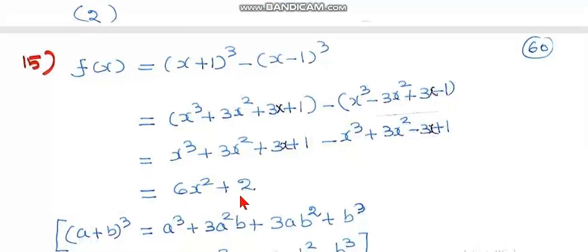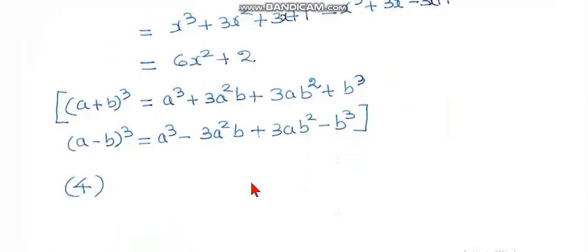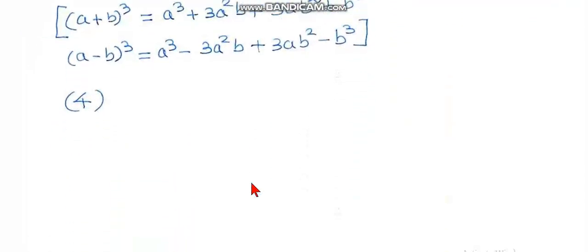Removing the brackets: x³ + 3x² + 3x + 1 − x³ + 3x² − 3x + 1. This simplifies to 6x² + 2, which is a quadratic function. So the fourth choice is the correct choice.